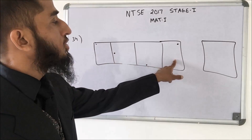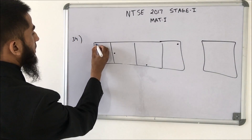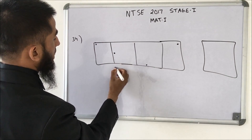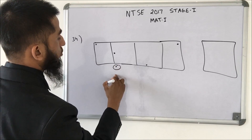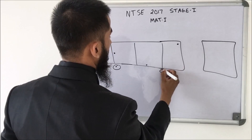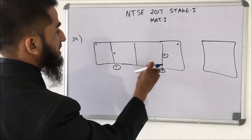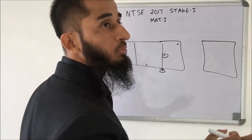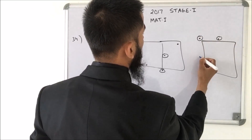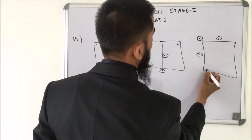Here we have 4 figures in a sequence and need to find the next. We start at a corner, then go to the middle, then skip one corner, then go to the middle again, and then skip corner and middle together. So the pattern is: skip 0, skip 1, skip 2 — meaning next we skip 3. The correct answer is at the corner, skipping 3 positions.